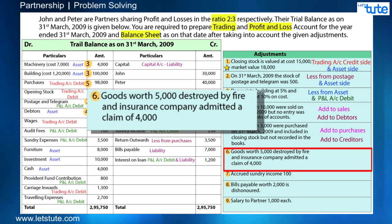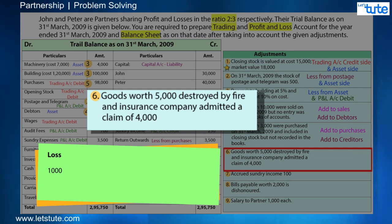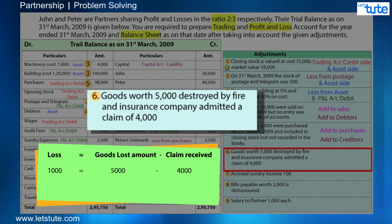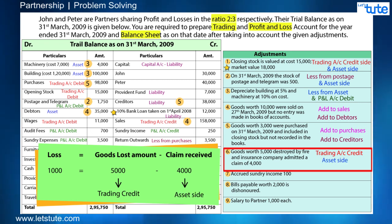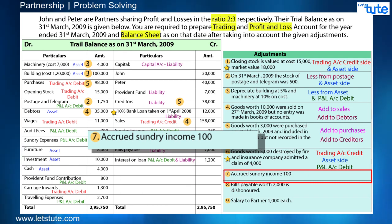Sixth adjustment: goods worth 5,000 destroyed by fire, and the insurance company admitted a claim of 4,000. The company faces a loss of 1,000 since only 4,000 is received against goods lost worth 5,000. The effects are: goods lost 5,000 — trading account credit since the goods have been lost; insurance claim receivable 4,000 — this will be our asset; and the net loss of 1,000 will go on the P&L account debit side.